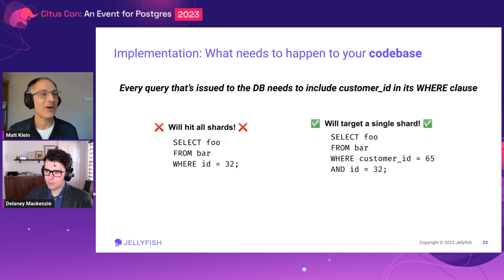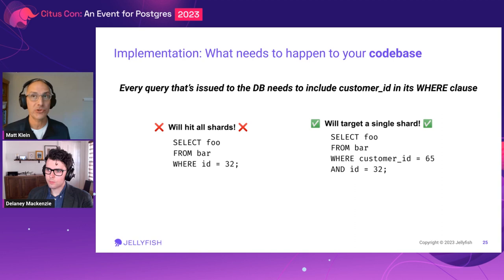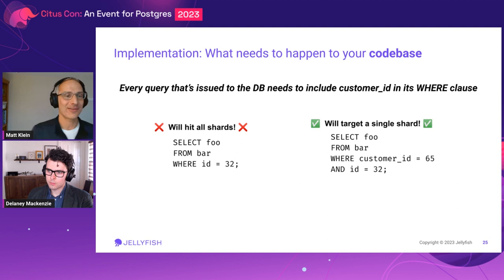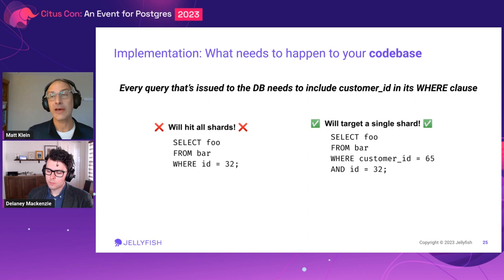Let's pivot from database schema to what needs to happen to your code base. Once you've got a Citus cluster stood up and tables distributed by customer ID, you need to enable the Citus query planner to know how to route each query to the right shard. You need to change your code base so that all queries your applications send to the database will include customer ID in the WHERE clause, even when that customer ID filter wouldn't change the semantics of the query at all. We're a big Python Django shop, so we have a lot of code using the Django ORM, but also SQLAlchemy and raw SQL.